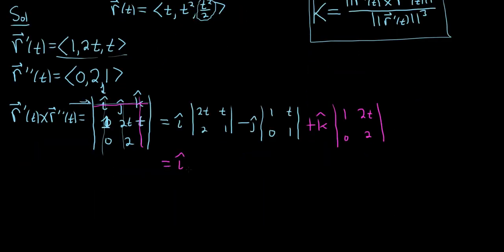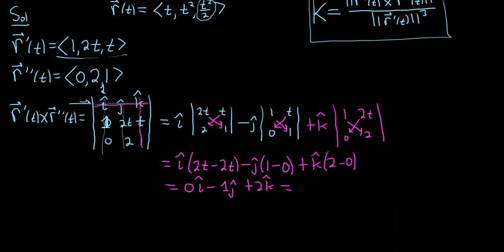Okay, let's keep going. This is equal to i hat. Then you multiply. So it's 2t times 1, so 2t, minus 2 times t, so 2t. Oh, look at that. It goes away. It's always good. Minus j hat. 1 times 1, which is 1. Minus t times 0, which is 0. Plus k hat. 1 times 2, which is 2. Minus 2t times 0, which is 0. So this is equal to 0 i hat minus 1 j hat plus 2 k hat. Let's write this in component form. That would be 0, negative 1, 2.